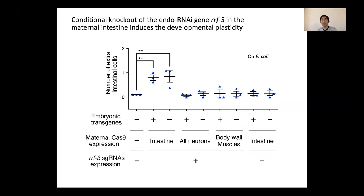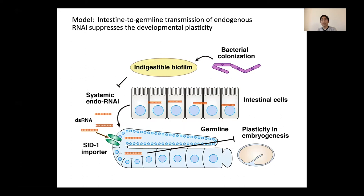In this experiment, the RNAi gene RRF3 was knocked out in a tissue-specific manner using a technique called somatic CRISPR to determine in which cells RNAi is triggered. In somatic CRISPR, Cas9 is expressed in a cell-specific manner, resulting in a conditional knockout of a target gene only in the target tissue. We found that conditional knockout of the gene in the maternal intestine induced extra intestinal cells, so the action of RNAi in the intestine is essential. Collectively, our results suggest that RNAi transmitted to the maternal germline suppresses the developmental plasticity in the absence of active gut microbes, with the maternal intestine as a strong candidate source of RNA propagation.